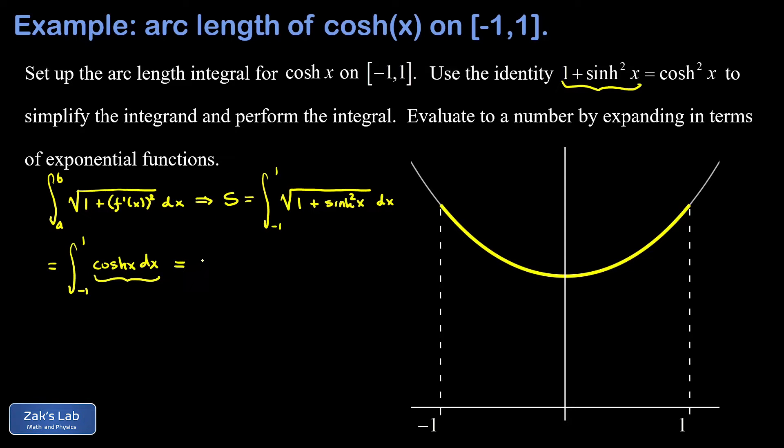There's one more thing I want to do before we actually integrate, and that's take advantage of the symmetry of the cosh function. We can rewrite this integral as twice the integral from zero to one of cosh x dx. The reason we can do this is because the cosh function is even, in other words it's symmetric about the y-axis.